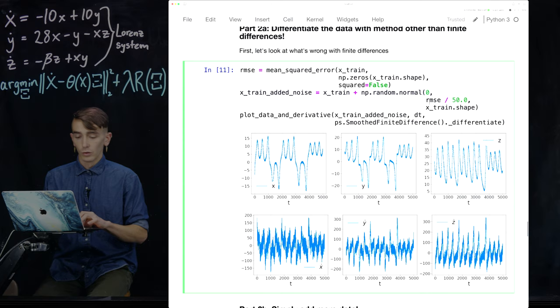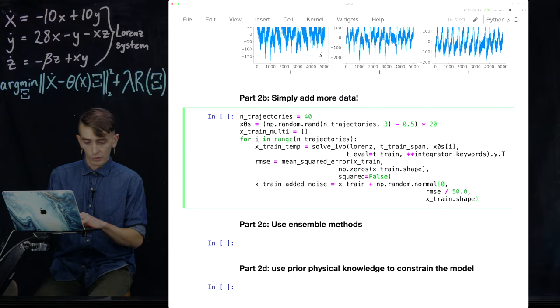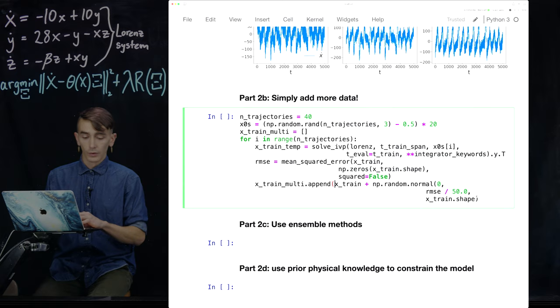So we're going to add 2% noise to each of these 40 trajectories and then fit all 40 at once, which you'll see in a moment. So this will be instead of X_train_added_noise, we're adding all these training trajectories to this X_train_multiple variable. So this is an array of all the 40 different trajectories.